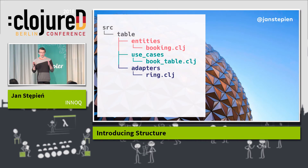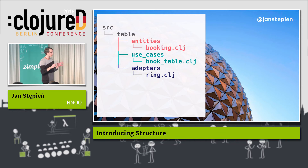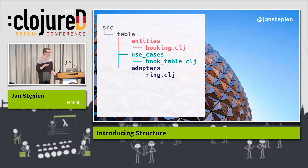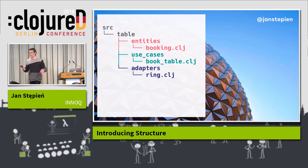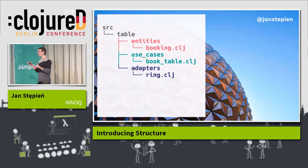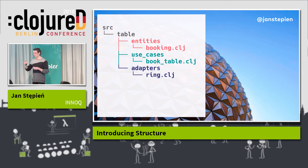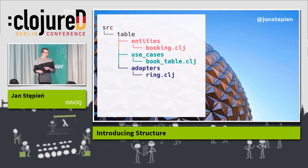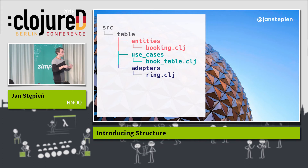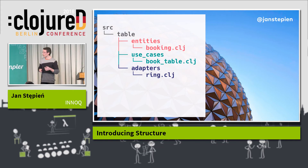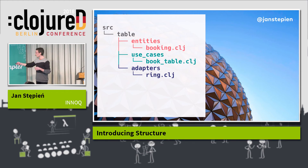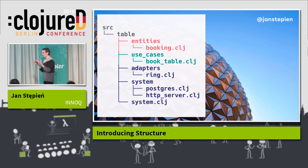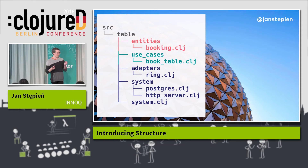We have our first three layers in place. The problem is that everything we've implemented so far is pure and functional but completely dead. There are some moving pieces which are missing — specifically there is no database against which we would execute our save-booking function calls, and there is no HTTP server which will expose our Ring handler to the outside world.